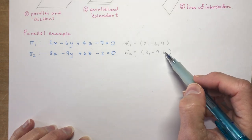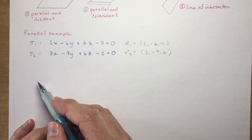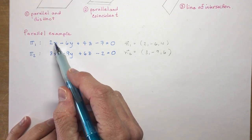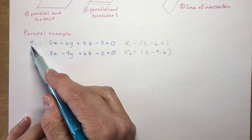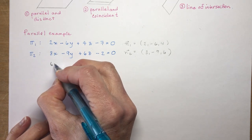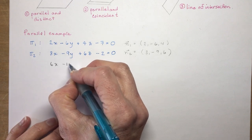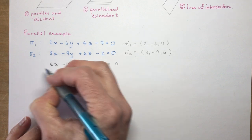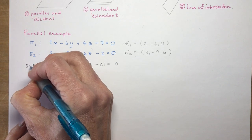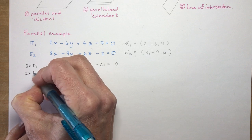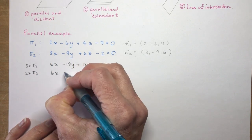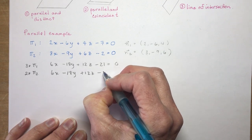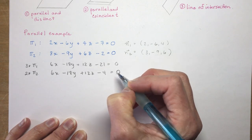If you look at the ratios of these three numbers, you'll find they are all two-thirds. Another way to check: multiply plane one by three and you get 6x - 18y + 12z - 21 = 0. Multiply plane two by two and you get 6x - 18y + 12z - 4 = 0. The normals can be scaled by multiplying by a constant.